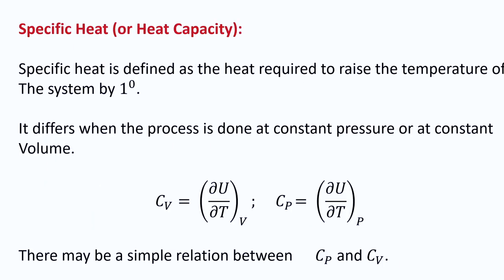Finally, specific heat is defined as the heat required to raise the temperature of a system by 1 degree. It differs depending on whether the process is performed at constant pressure or constant volume, giving us two quantities: C_V (constant volume) and C_P (constant pressure). For an ideal gas, there is a simple relation between C_P and C_V. We will continue with the second law, then the third law, and then move to more intricate phenomena in thermodynamics before proceeding to statistical mechanics.